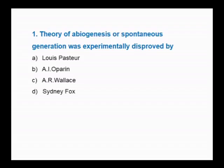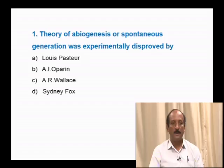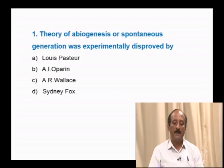Students, next, coming to the discussion of questions related to the evolution chapter. Question number 1: The theory of abiogenesis or spontaneous generation was experimentally disproved by — options: Louis Pasteur, A.I. Oparin, Alfred Russell Wallace, Sidney Fox.